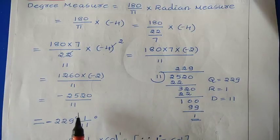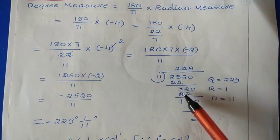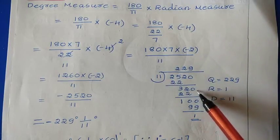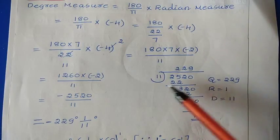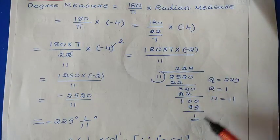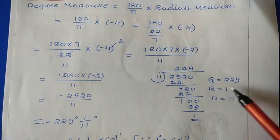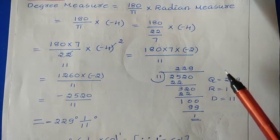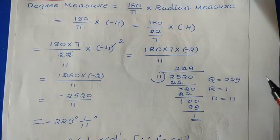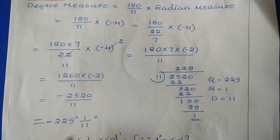We got −2520/11 in fraction form; we need to represent it in degrees. Perform the division: 2520 ÷ 11. 11 × 2 = 22, remainder 3 from 25; bring down 2 giving 32, 11 × 2 = 22, remainder 10; bring down 0 giving 100, 11 × 9 = 99, remainder 1. So quotient is 229, remainder is 1, divisor is 11. Write as −229 degrees, with 1/11 remaining.